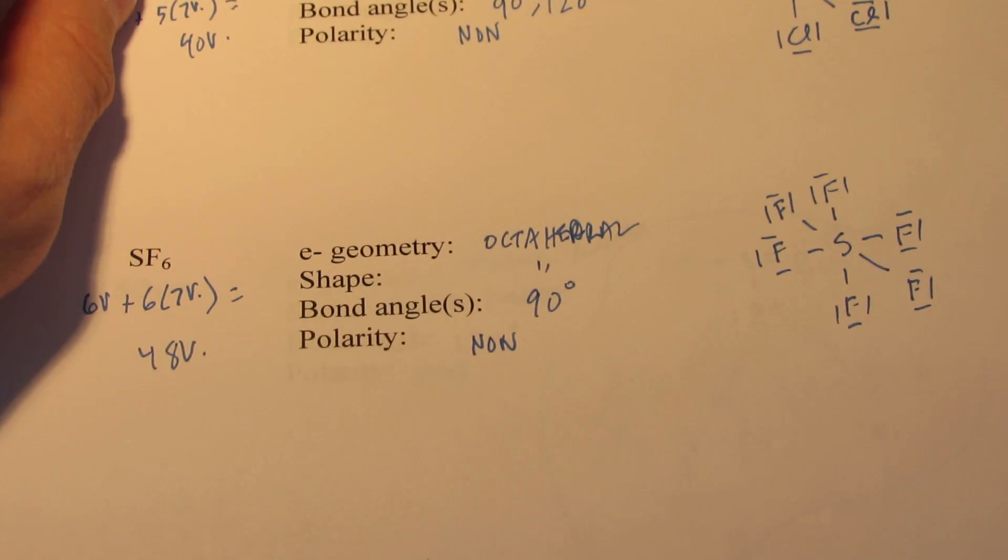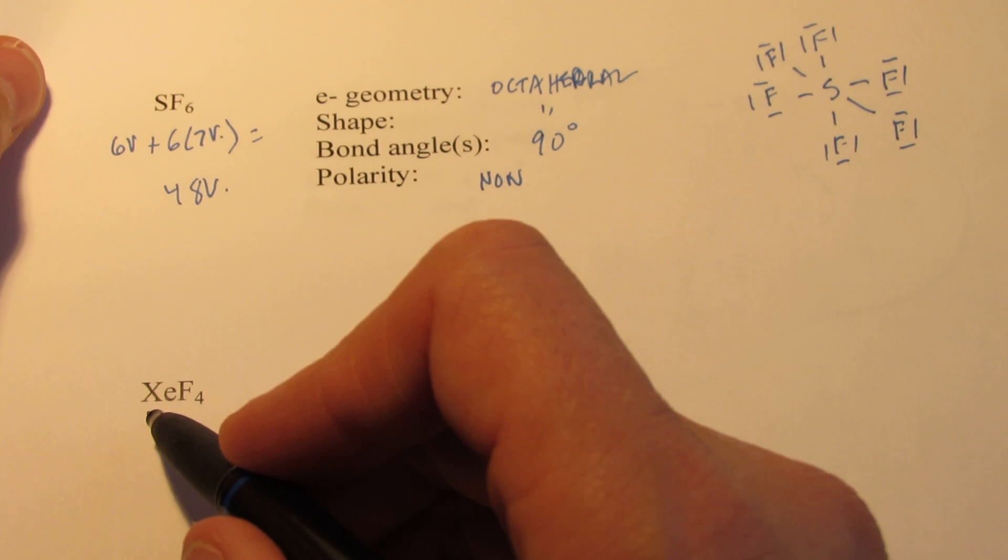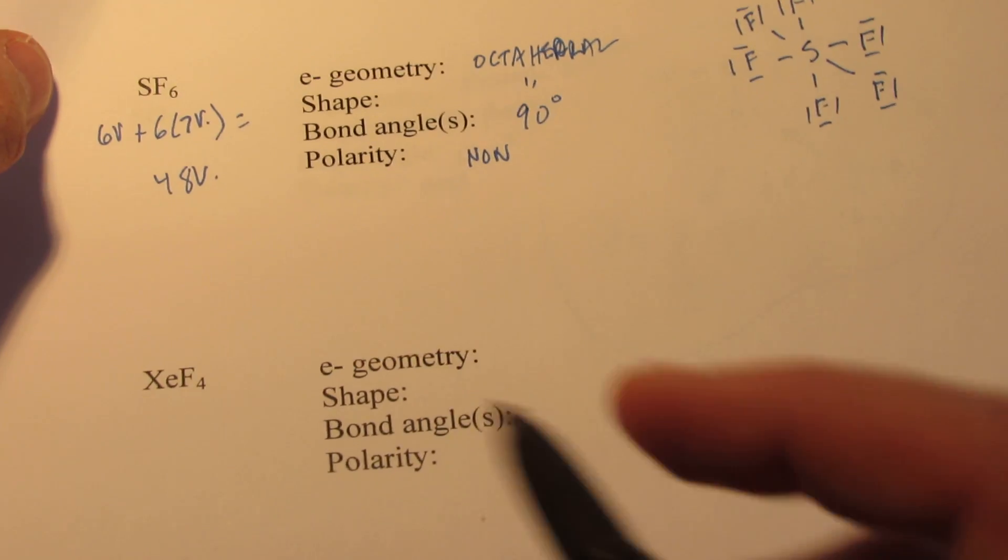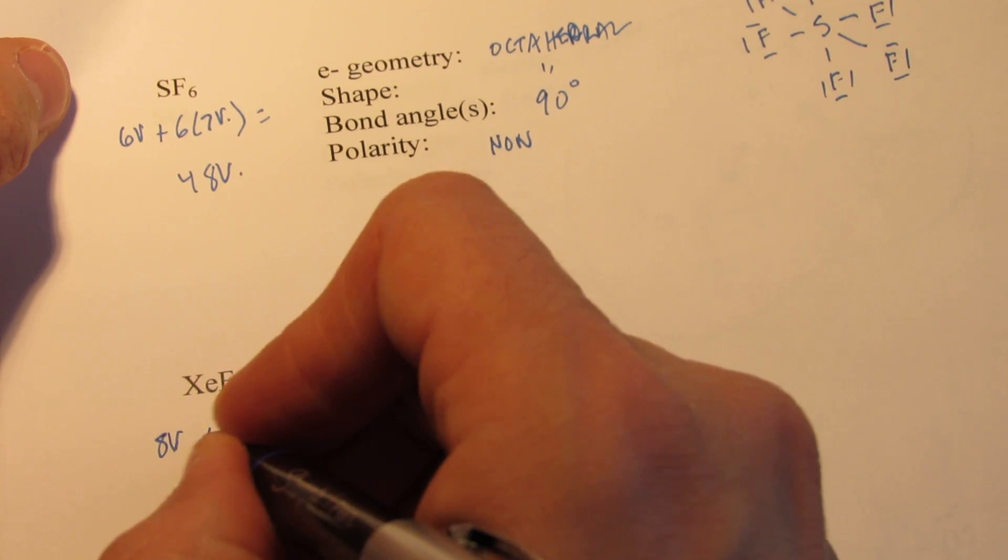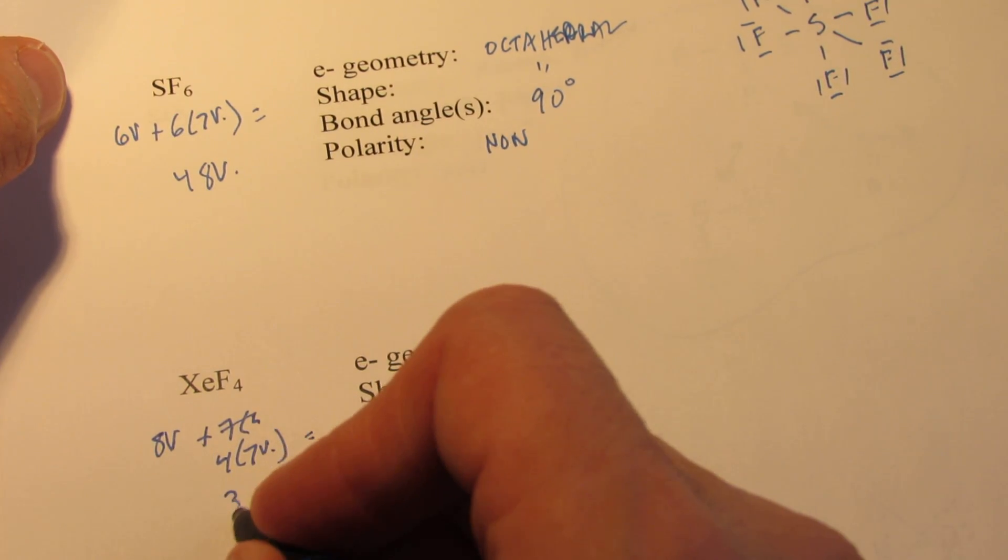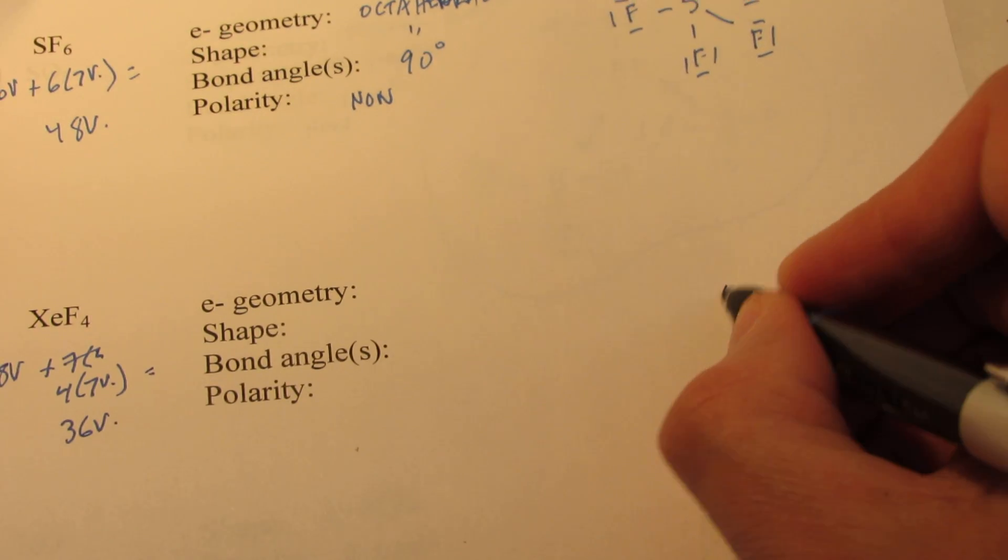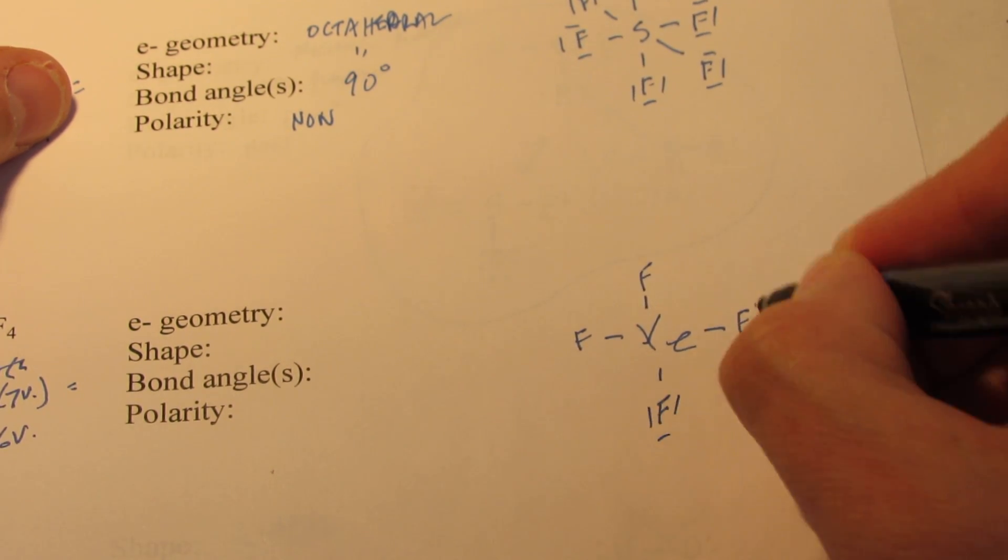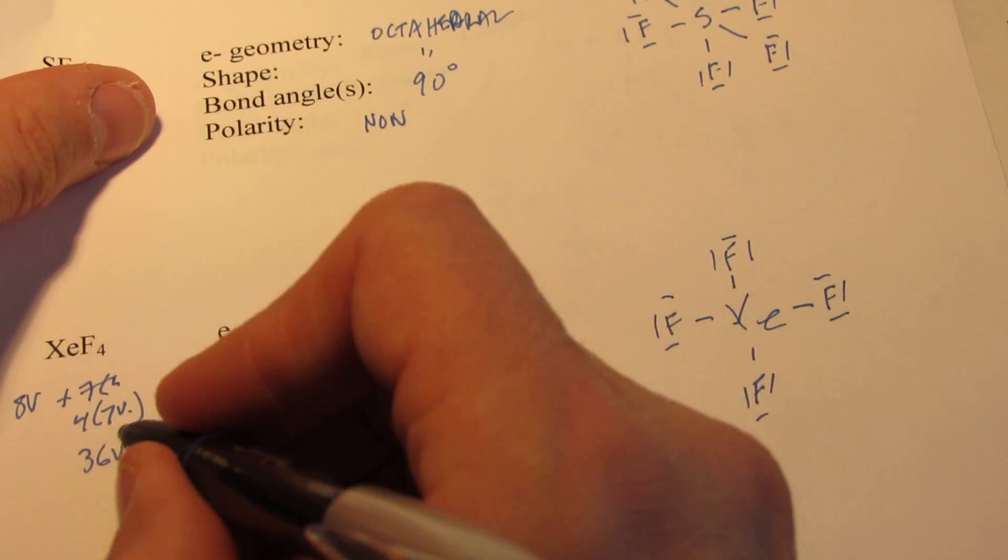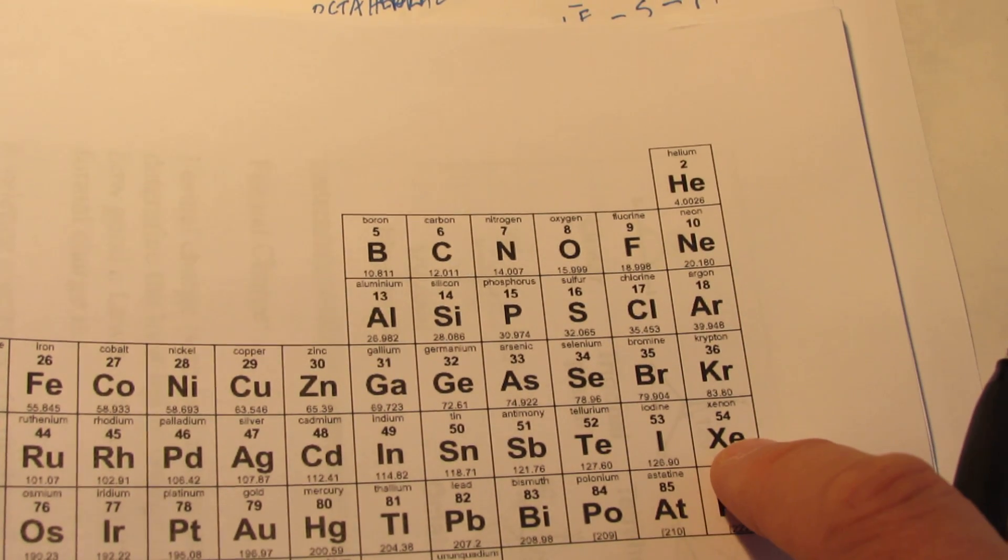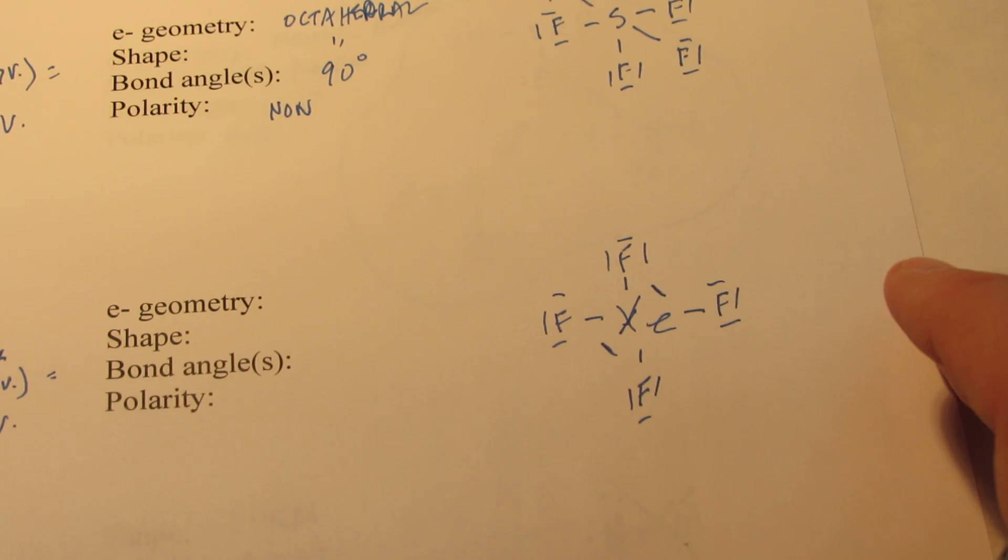Okay, XeF4. Now, this is interesting for a couple of reasons. First of all, we have a noble gas forming a bond. You wouldn't expect that. But at very high temperatures and bonding with a very electronegative element, you can get noble gases to react. And this is an example of that. Xenon has eight valence. Each fluorine has seven valence. So we have 28 plus eight. Hopefully, I'm doing my math right. We have 36 valence electrons here. Put Xenon in the middle. And we'll put our four fluorines on there, giving each a full octet. And, of course, that gives me 32 valence, but I'm allowed 36. So I have two more pairs to add. We'll put those on the central atom, Xenon. Can Xenon have an expanded octet? Does it have at least three energy levels?